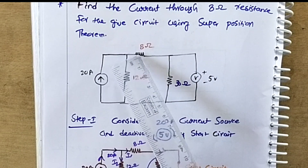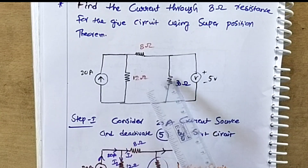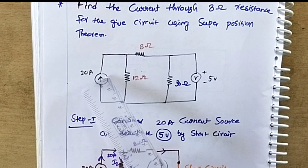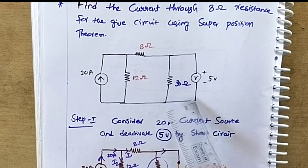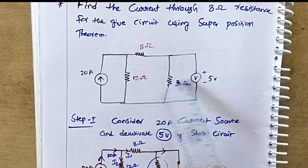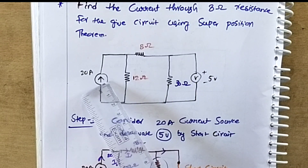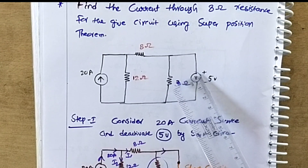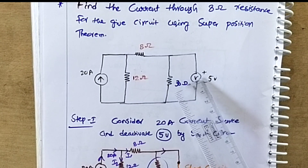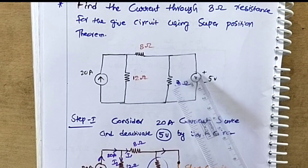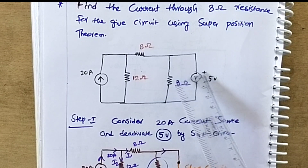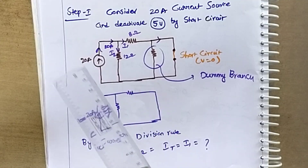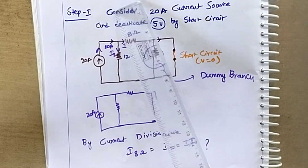The superposition theorem states that the current through the 8 ohm resistance is the algebraic sum of currents flowing through each source acting alone while the other source is deactivated. In step one, we activate the 20 amp current source and deactivate the 5 volt source. Then in step two, we activate the 5 volt source and deactivate the 20 amp source. A current source is deactivated by open circuit; a voltage source is deactivated by short circuit, making voltage zero.